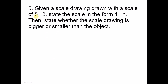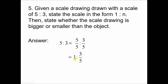Question five: given a scale drawing drawn with the scale of five to three, state the scale in the form one to n, then state whether the scale drawing is bigger or smaller than the object. For the first part: five to three — divide both sides by five — gives one to three-fifths. Remember: one represents the scale drawing, and three-fifths represents the object. Since one is bigger than three-fifths, the scale drawing has a bigger size compared to the object. Hence the answer is: scale drawing is bigger.